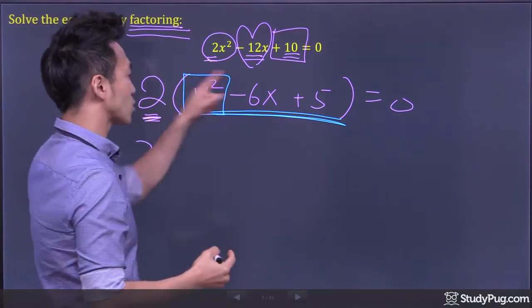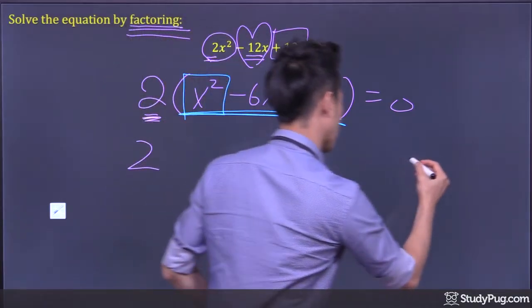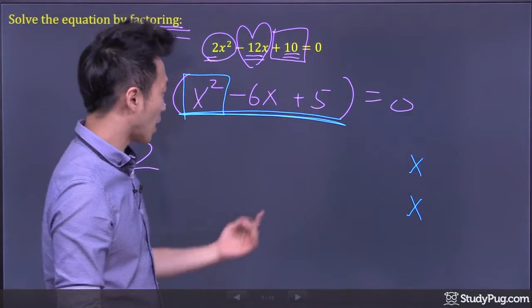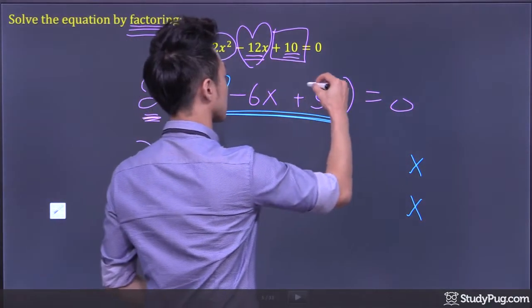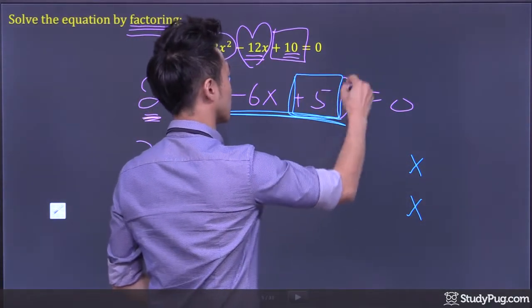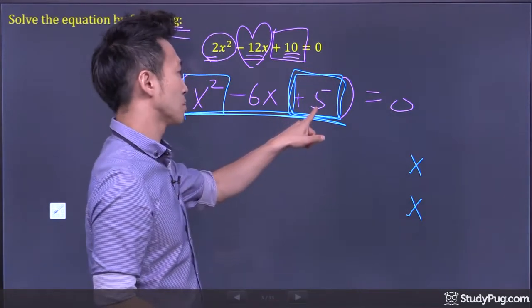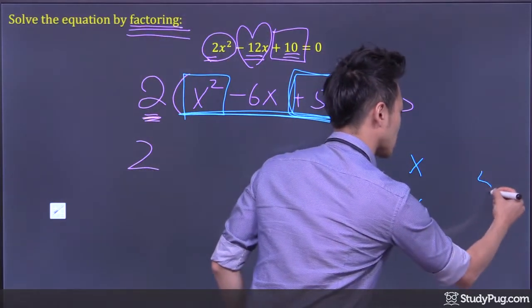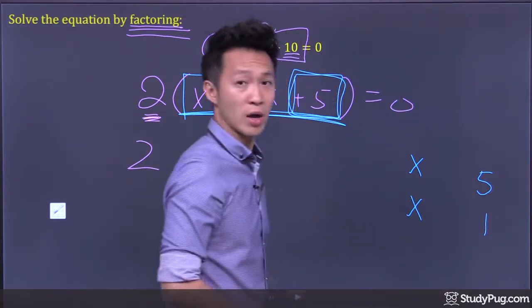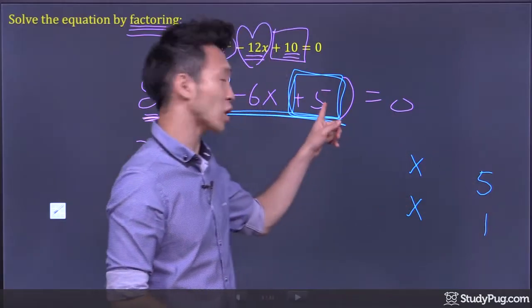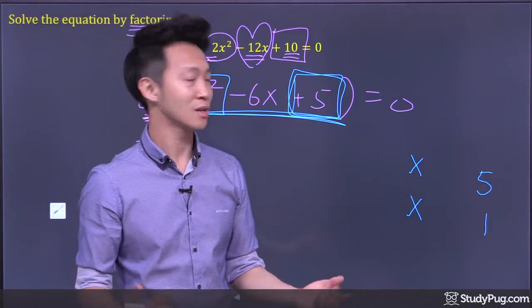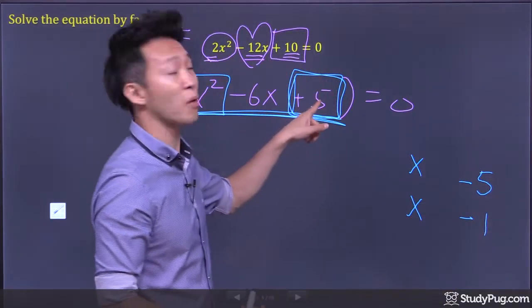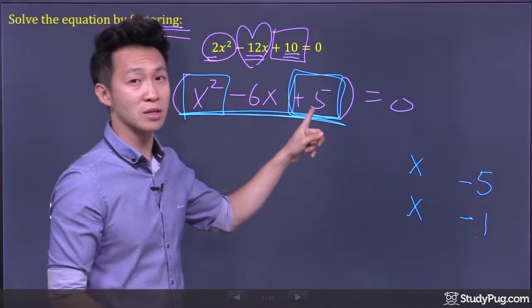So look at the leading term, x². We can break it apart as x times x. Now, look at the constant term, positive 5. Well positive 5 can be positive 5 times positive 1. But is there another option? Yes. -5 times -1 is also positive 5, because negative times negative gives positive.